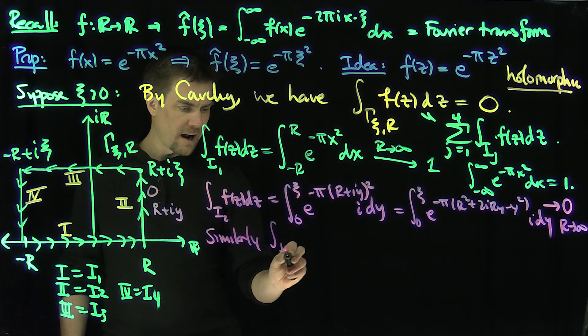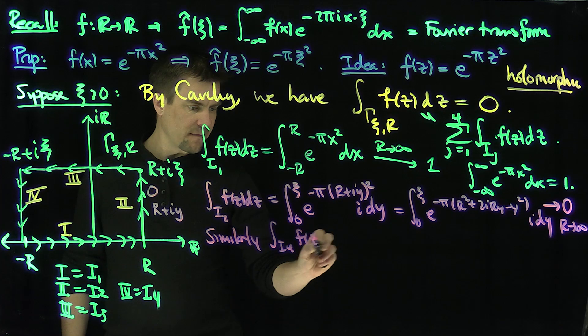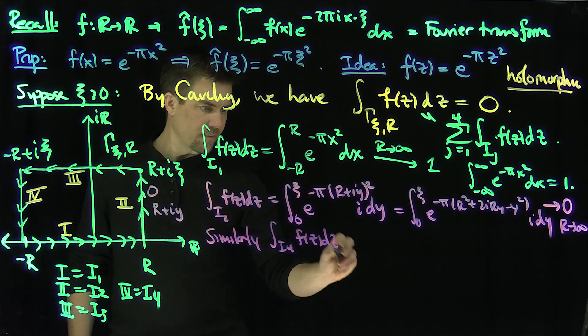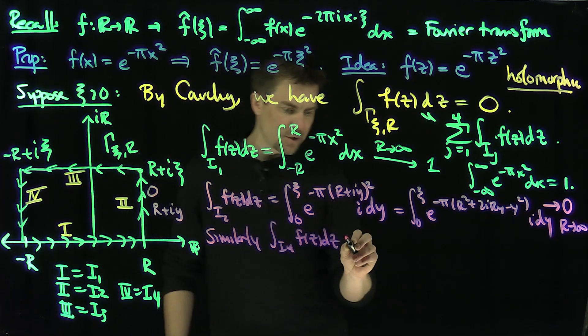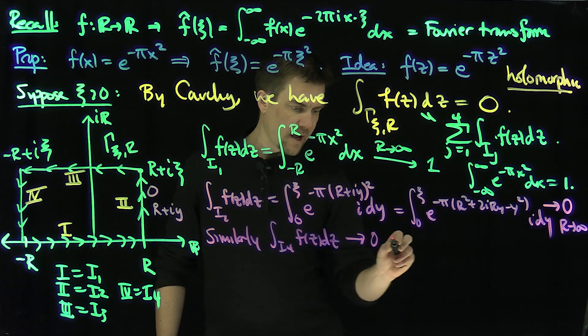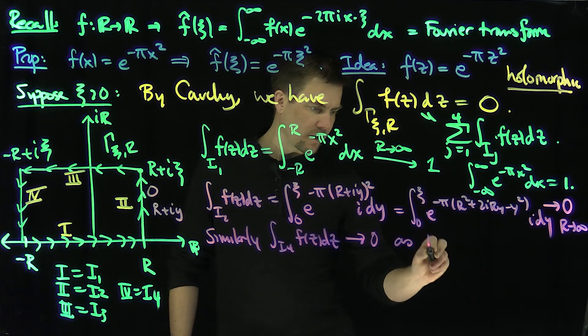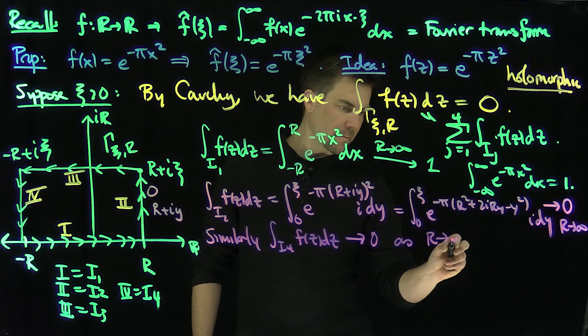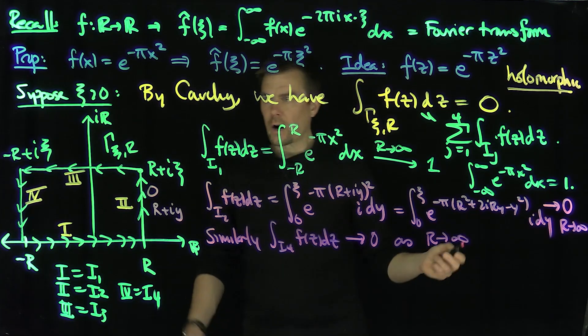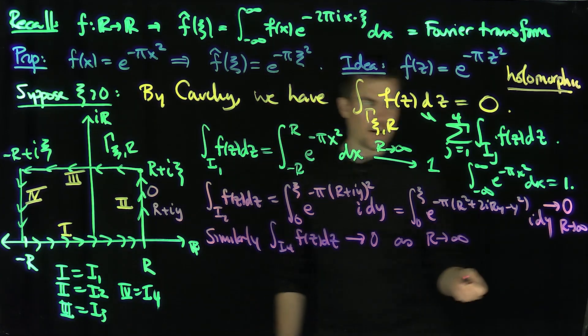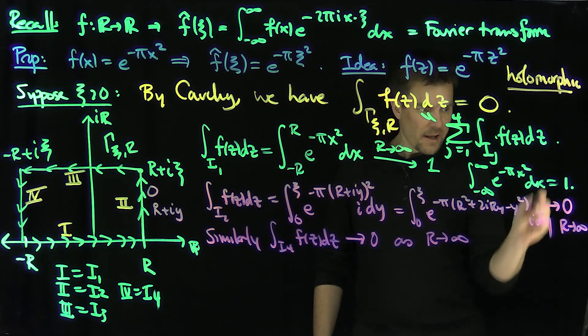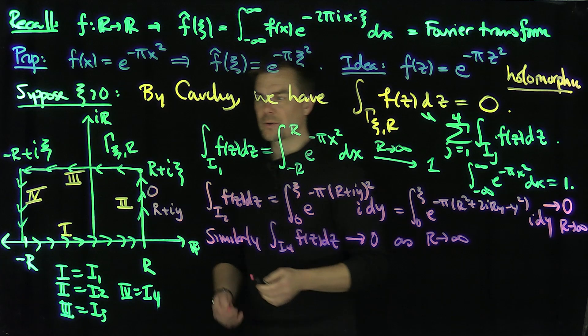Similarly, the integral over I₄ of f(z) dz tends to zero as R → ∞. So as R → ∞ in this contour, I₁ → 1, I₂ → 0, and I₄ → 0.